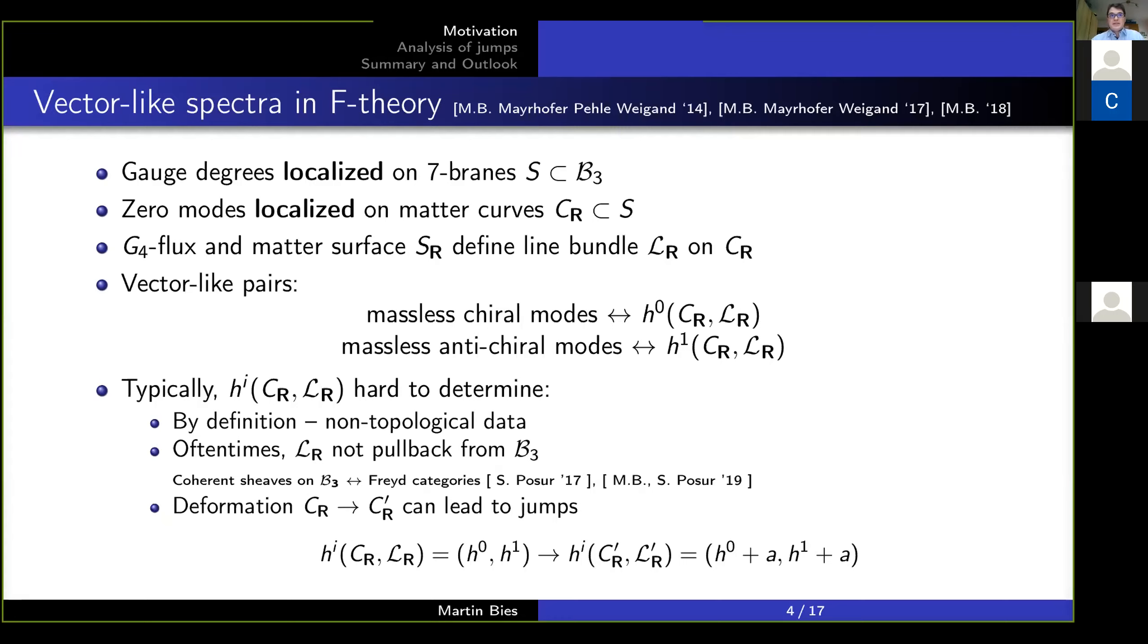And the matter that is localized on these curves can be counted. Namely, the G4 flux defines on these curves a line bundle, which is, let's say, a fancy mathematical term for U(1) gauge theory. And this line bundle has some sections, that is some functions on that curve, and these turn out to be zero-modes.